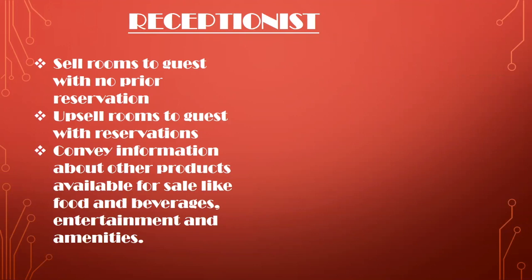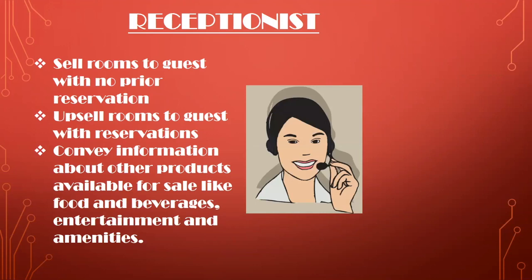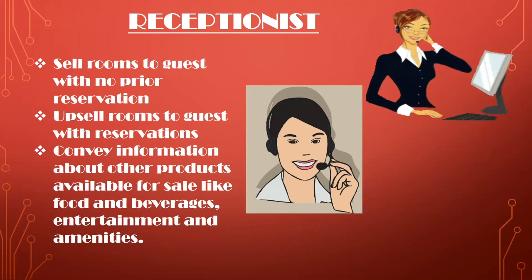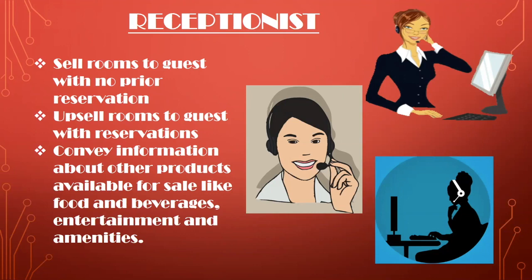Let's discuss how some hotel staff can perform the job of a sales representative. A receptionist, for example, would try to sell a room to a guest who does not have a reservation. They also try to upsell the room — for example, if a guest has booked a deluxe room, they try to sell a premium room like a suite or a club floor room. They also convey information about food and beverage outlets, entertainment facilities, and amenities like the health club and spa, to ensure sales exceed anticipations.